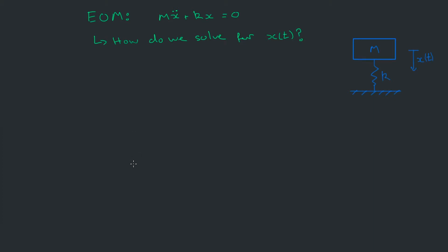Hello everybody, thanks for watching. Today we're going to continue on from last video, where we derived the equation of motion for a simple spring-mass system. In this video we're going to be solving this equation of motion — specifically it's a second-order differential equation which is homogeneous, meaning everything on the left-hand side is equal to zero. We're going to solve this equation of motion to find x(t), to work out where the mass is going to be at any time t.